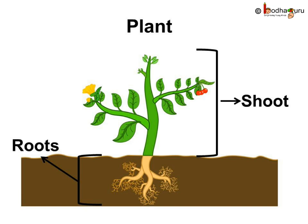So we saw the plant has two main parts: roots that grow below the ground and shoot that grows above the ground. This includes stem, leaves, flower and fruits. Now let us look at each of these parts in some more detail.